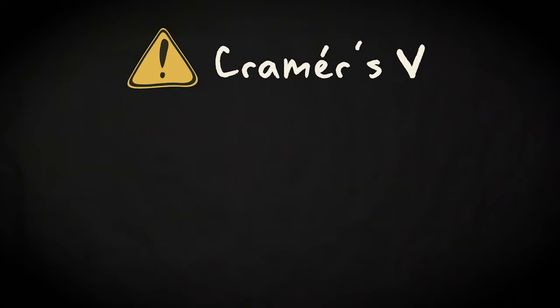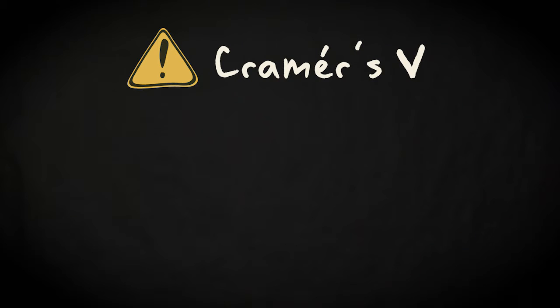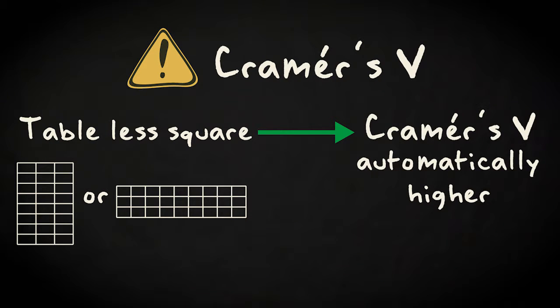There is something to keep in mind however with Cramer's V. The less square the contingency table, that is the more unequal the number of rows versus the number of columns, the larger the index tends to become without strong evidence of a meaningful association.